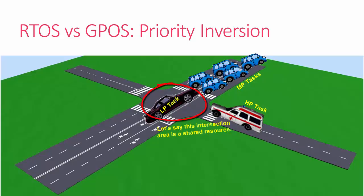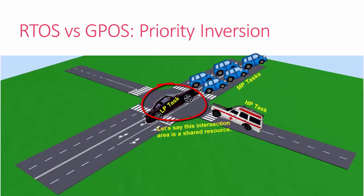...is a shared resource, because it is common to both roads. Now let's say the lower priority task has acquired the key to access this shared area, but it is not allowed to run on the CPU because...